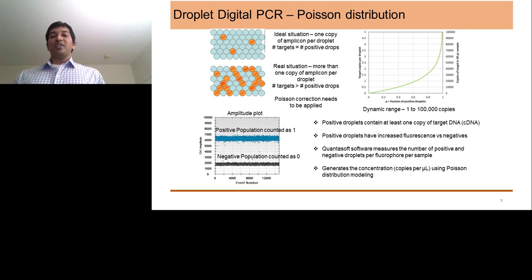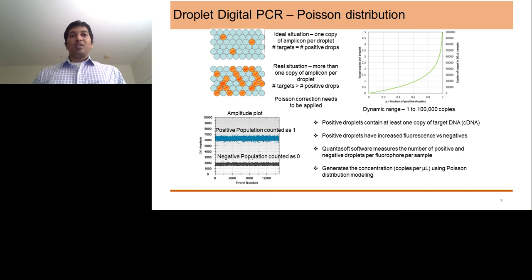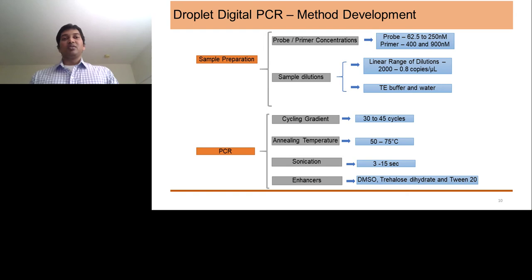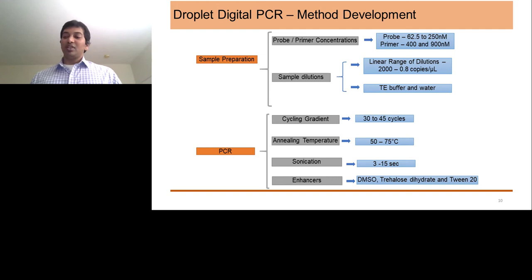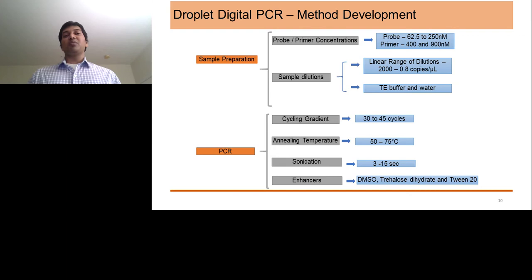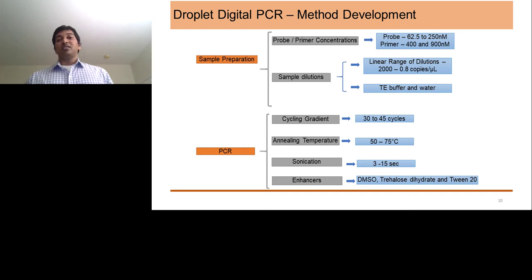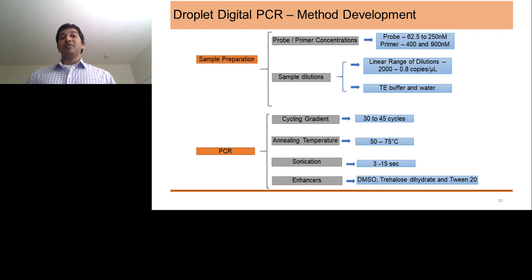The critical factors for developing a method on Digital PCR start with sample preparation. The first thing people in literature look to optimize is the probe and primer concentration — probe concentration has been played around from 62.5 to 250 nanomolar, and primers from 400 to 900 nanomolar. These concentrations are averages; people have played a bit lower as well, but this is the range where most studies have given results. Sample dilution also plays a very important role — the amount of genomic DNA fed into the reaction is critical.